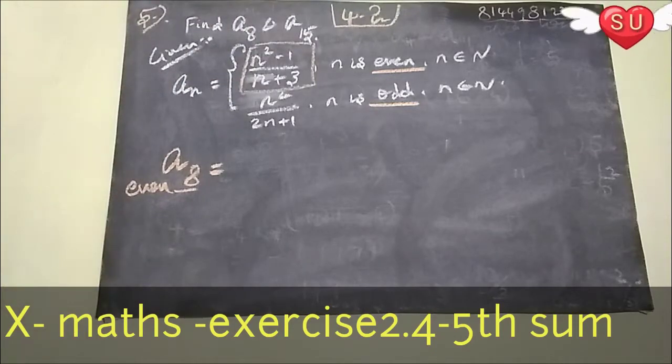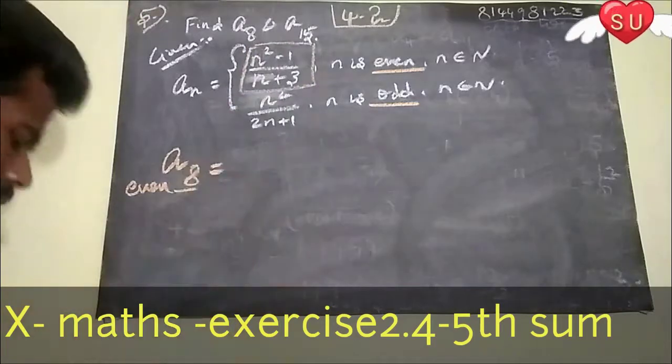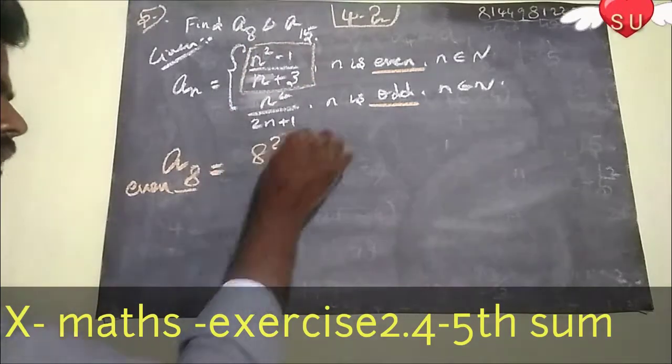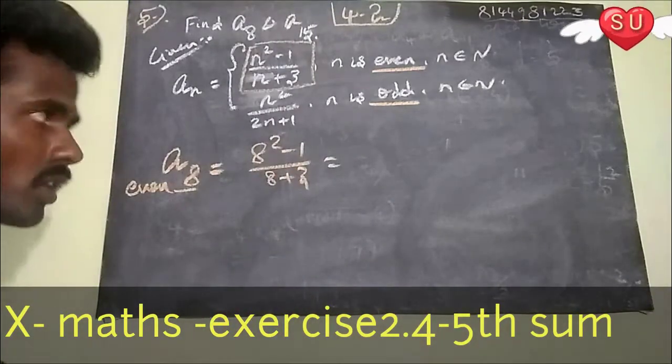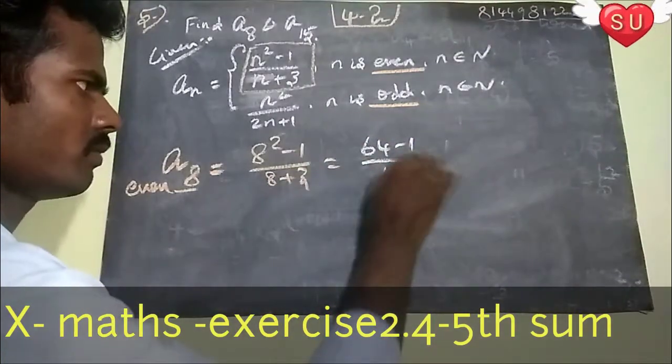What is even number? The formula: N squared minus 1, divided by N plus something. So, 8 squared divided by 8 plus 3. So, 8 squared is 64 minus 1. 8 plus 3 is 15.